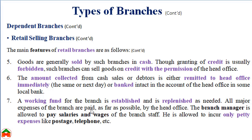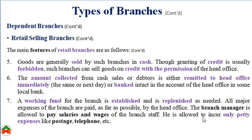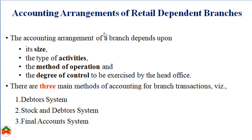There is a working fund for the branch that is established and replenished by the head office whenever needed. All major expenses of the branch are paid by the head office. The branch manager can pay salaries and wages of staff and is also allowed to incur petty cash expenses like postage and telephone — for these expenses the head office provides a petty cash fund. Now we are going to learn about the accounting arrangements for retail dependent branches.